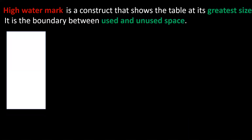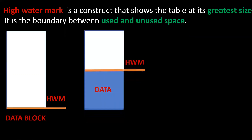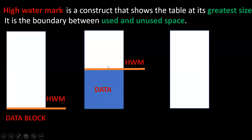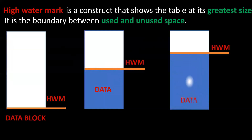Consider this data block. A new table has been created and one data block has been assigned to the table. At the start, the high watermark will be at the bottom because no records are there, and the white space is considered unused space. As we insert some data, the high watermark rises. After more data is added, the high watermark increases further. So as more and more records are inserted, the high watermark keeps increasing.